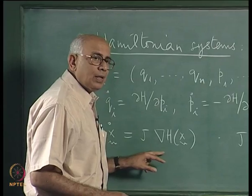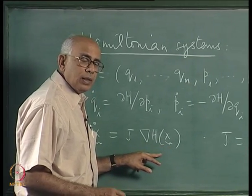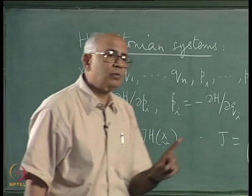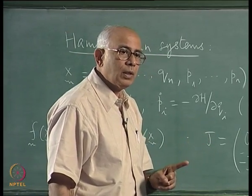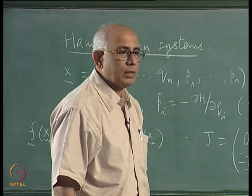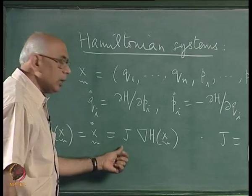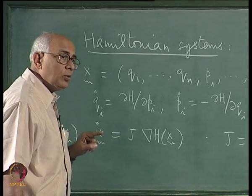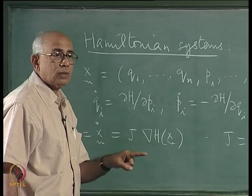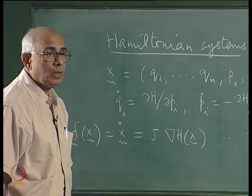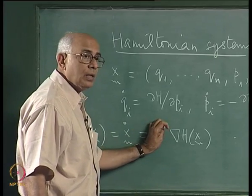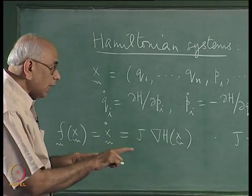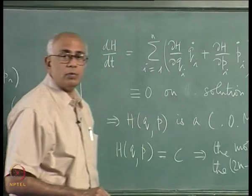Normally the gradient of a scalar is directed normal to its level surfaces. But with the J matrix, the velocity vector in phase space is directed on the level surface itself rather than normal to it. This is a major difference between ordinary gradient systems, where x dot equals the gradient of a scalar, and Hamiltonian systems, where the motion stays on a surface on which H is constant for each set of initial conditions.